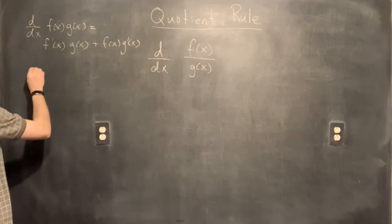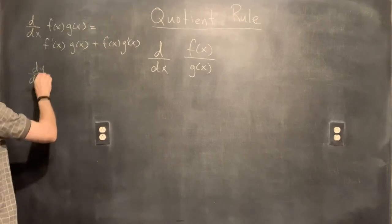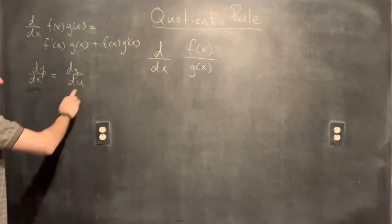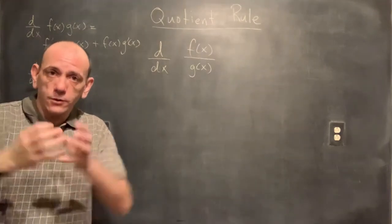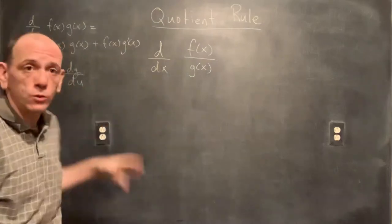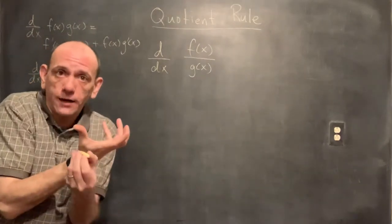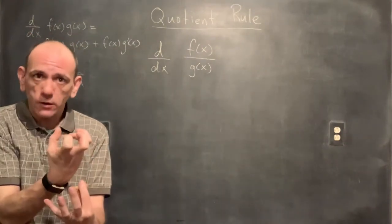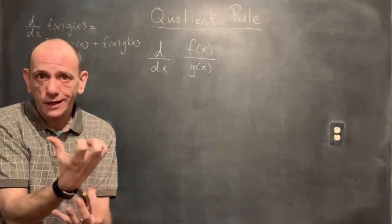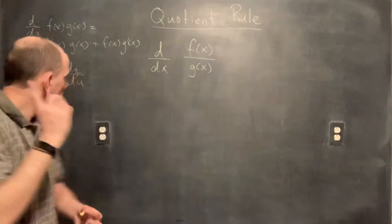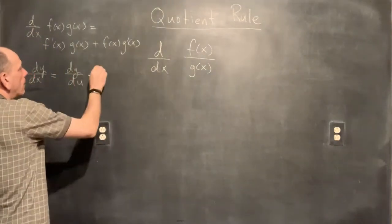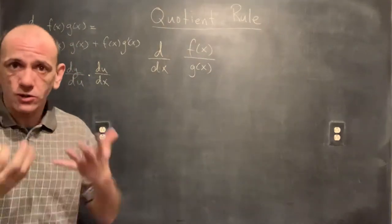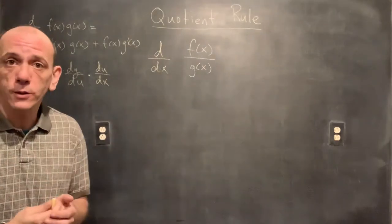The chain rule: the derivative of y with respect to x is the derivative of y with respect to u — where u is the inside function — times the derivative of u with respect to x. Chain rule is for composites: a function inside of another function. dy/du is the derivative of the outside function, treating the inside as a unit u, then multiply by du/dx, the derivative of that inside function.